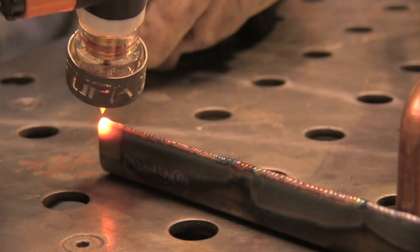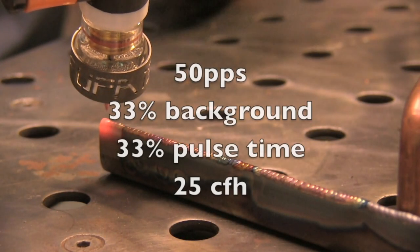On edge welds like this, I find it really helps to use pulse. Here I'm using 50 pulses a second, 33% background, 33% on time. Works great. 25 CFH.